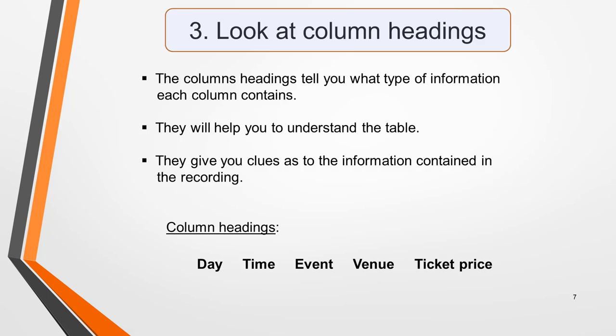The next task to do in your preparation time is to look at column headings. The column headings tell you what type of information each column contains. It's essential to read these as they'll help you to understand the table and give you a big clue as to what sort of information would be contained in the recording. The column headings in our practice question are day, time, event, venue and ticket price.